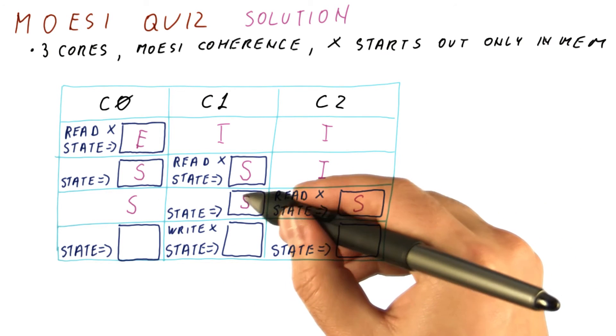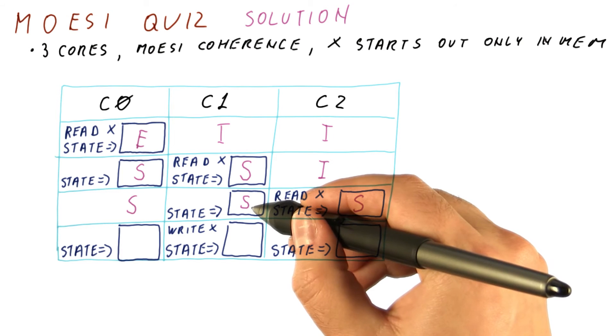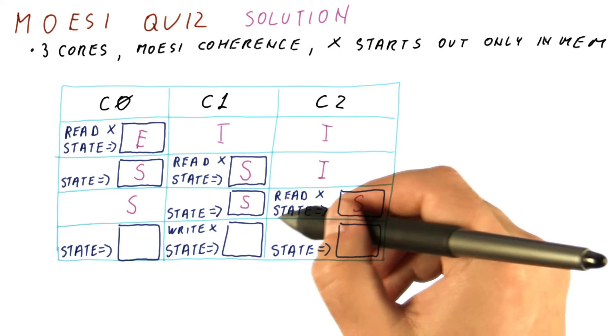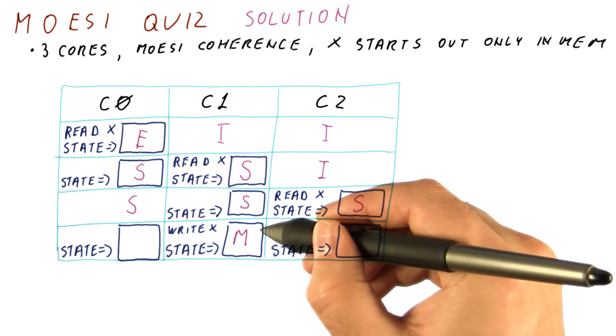finally, when C1 writes, because it was in the shared state, it will put an invalidation request on the bus. Once it does that, it can move to the modified state.